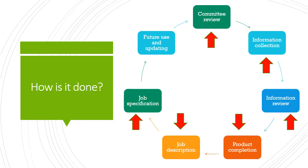The job specification is the statement of the knowledge, skills and abilities required of the person who is to perform the job. The last step in the job analysis procedure is to determine how the information will be stored for future use. The HR department should have access to this information in case additional end products are desired, and the job analysis committee will need to determine how to update the information periodically, as it has a tendency to become obsolete over time.